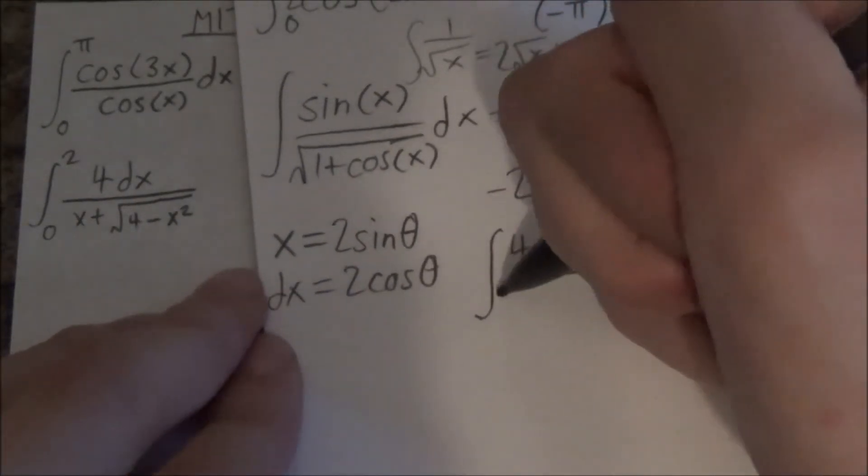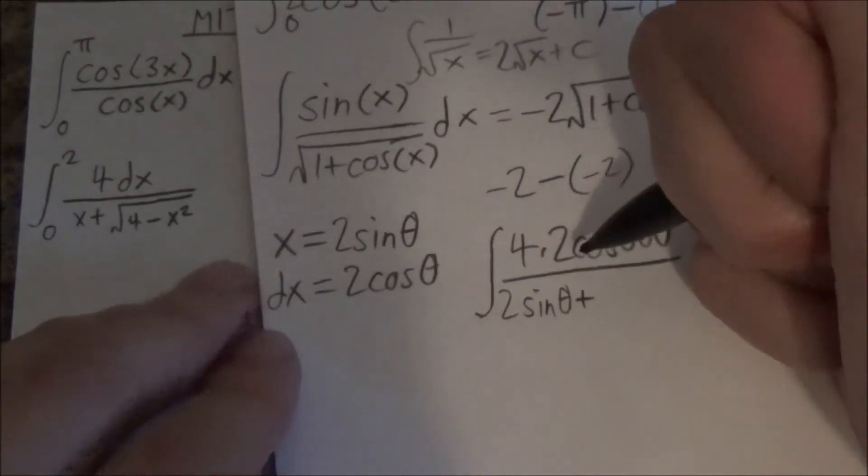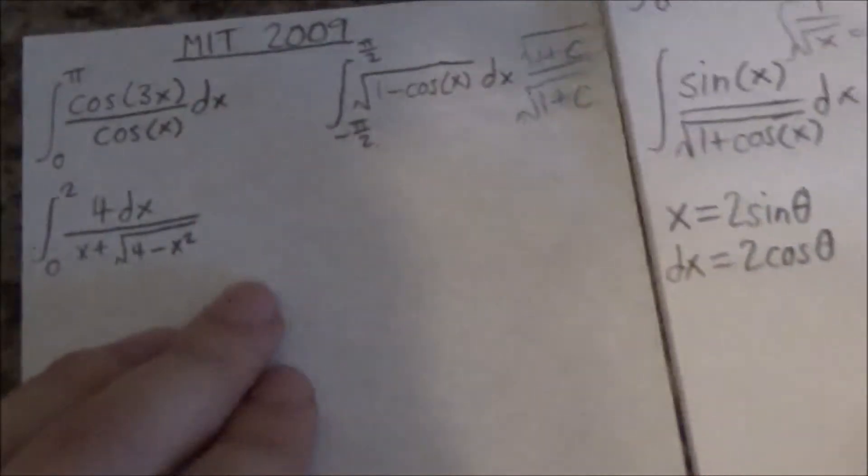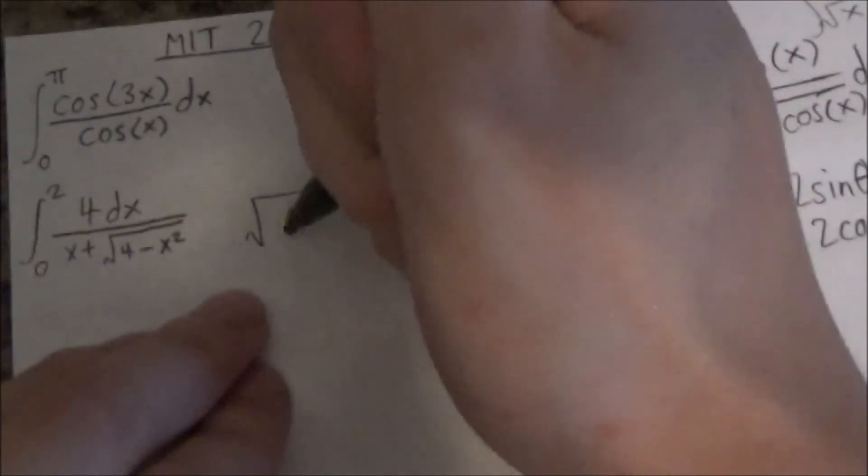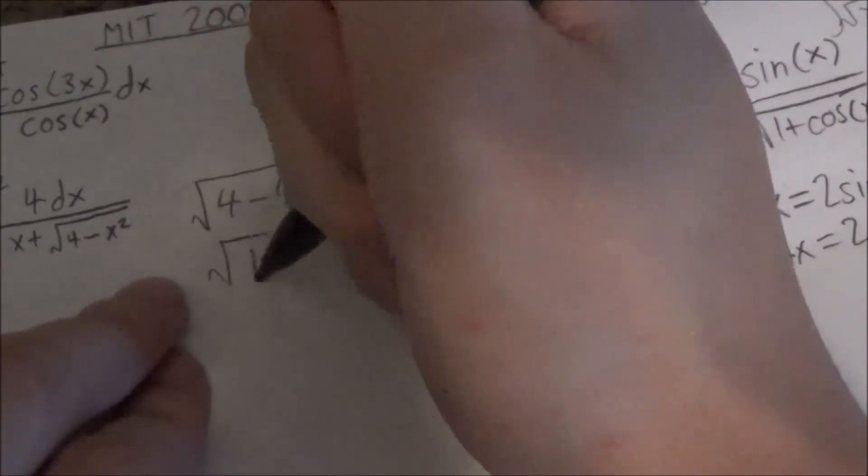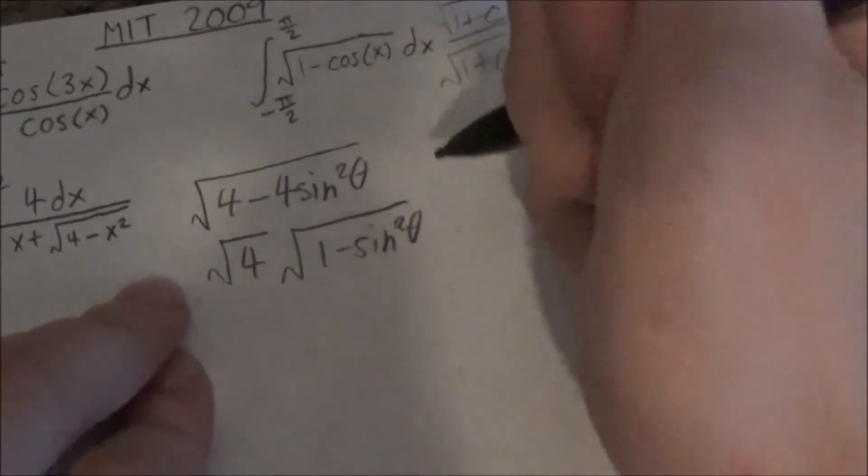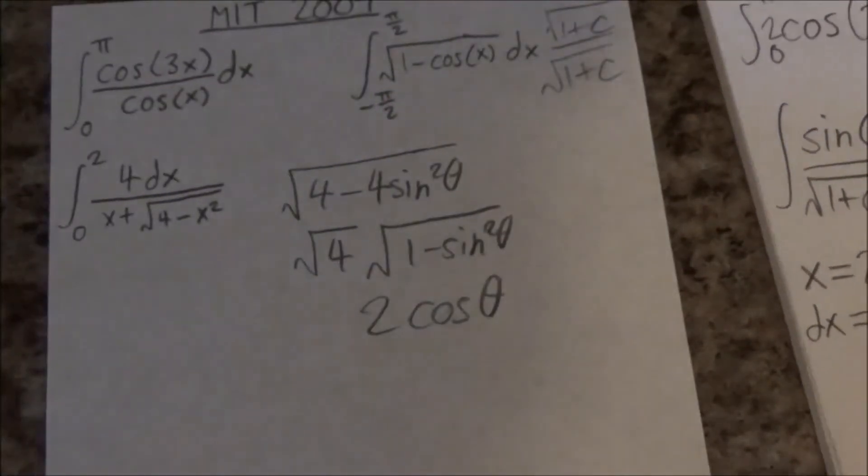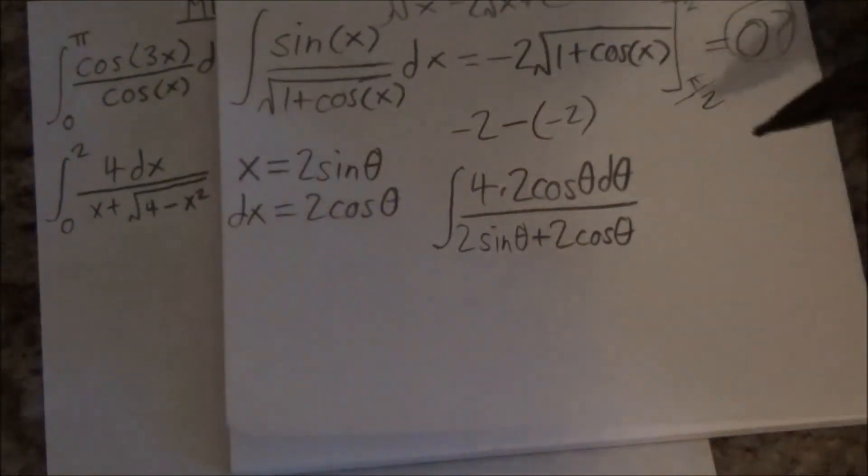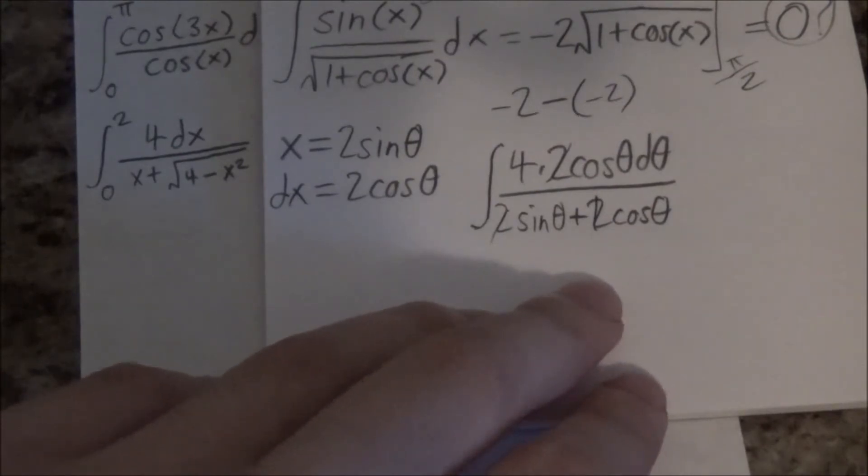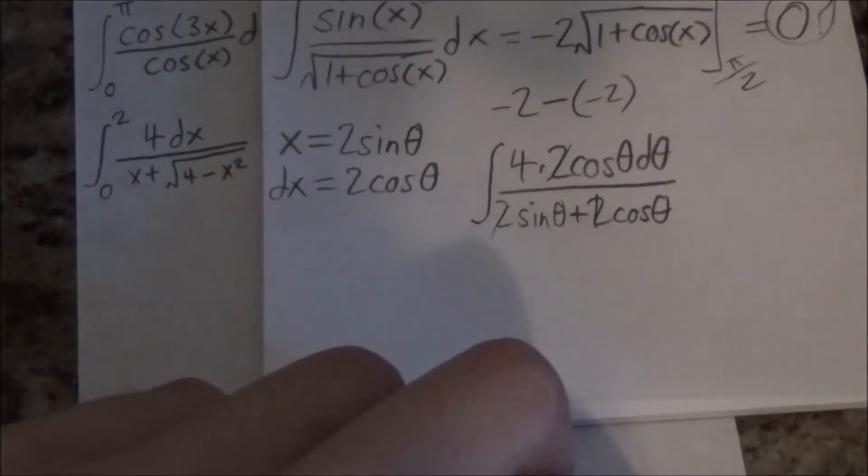And then x is 2 sine theta. Plus, and then whatever you plan to do with this. This is 2 cosine theta. So what this does is I'm trying to do 4 minus 4 sine square theta. So that the 4 can be factored out. And you'll be left with this. And this becomes 2 cosine theta. So I'm pretty much simplifying it and just getting rid of the square root. Because we all hate square roots. So here, so this is the result of the trig sub. The 2 cancels out. Holy hell.